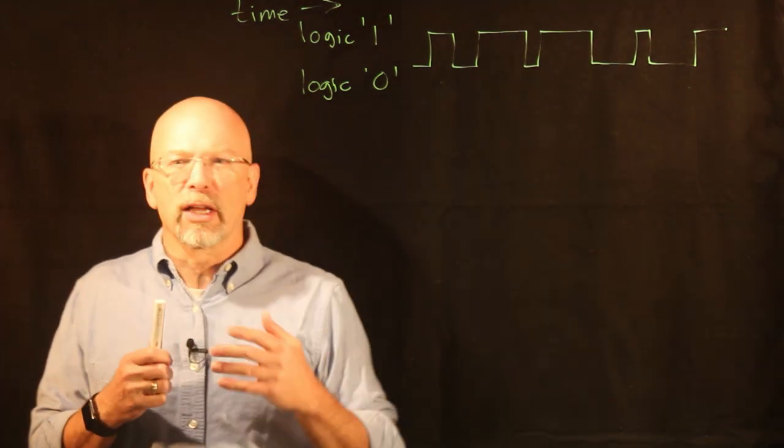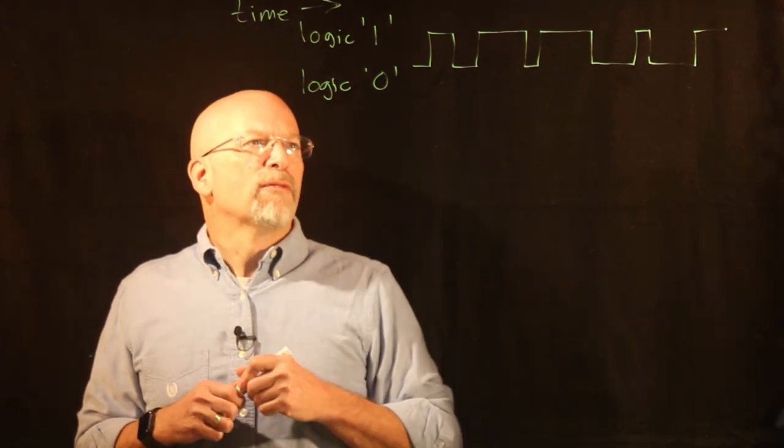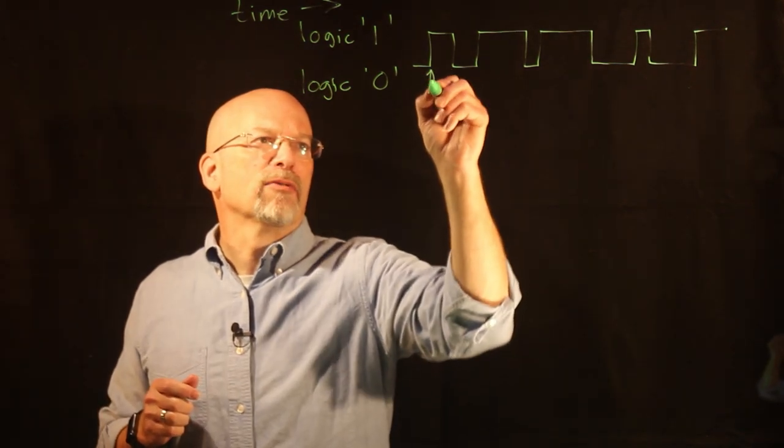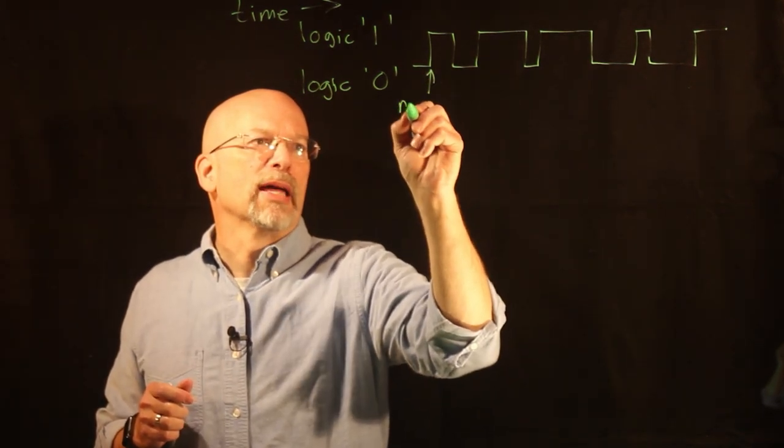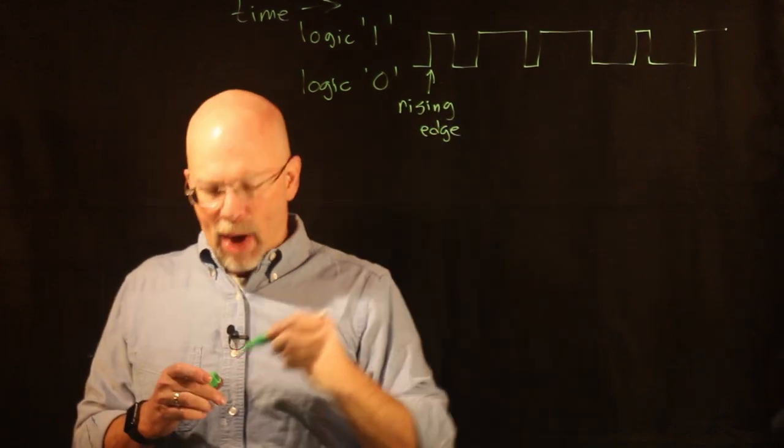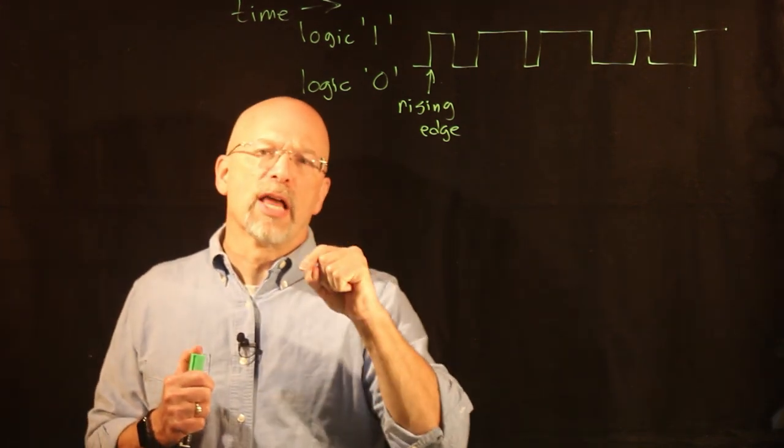First thing I want to talk about is an edge. Right here we have what is referred to as a rising edge. A rising edge is whenever we have that moment, whenever we have a transition from a logic zero to a logic one.